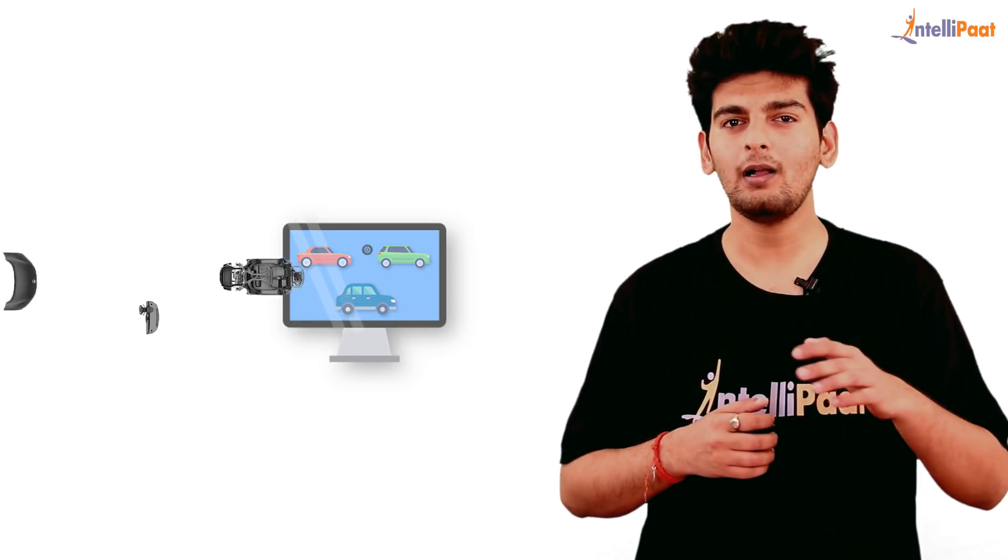But what about a machine? Now if I take this image of a car and feed it to a machine, will it be able to identify that it's a car? So this is where machine learning comes in. So what I'll do is I'll take all of these images of a car and keep on feeding them to the machine until it learns all the features associated with this car.